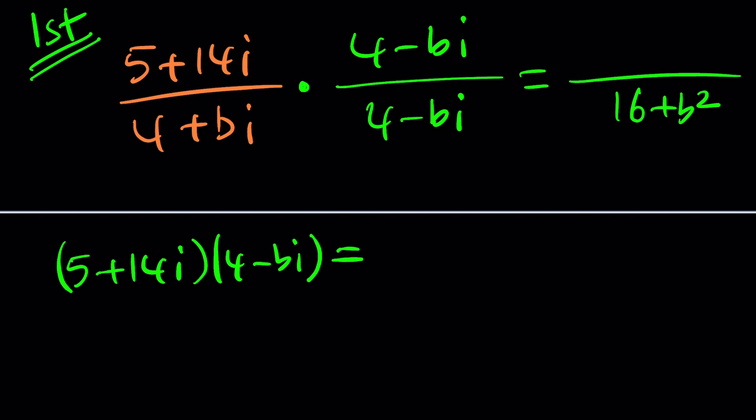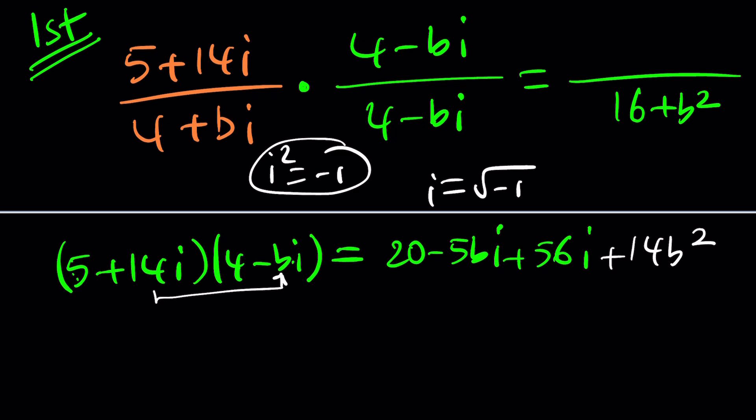For the numerator, we're going to have to do a little bit more work. Let's multiply 5 plus 14i by 4 minus bi. Let's distribute. 5 times 4 is 20, 5 times minus bi is minus 5bi, 14i times 4 is 56i with a plus sign. And minus, this is the critical part, i squared is negative 1 because i is the square root of negative 1.